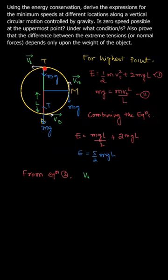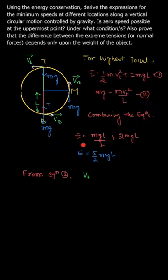At the topmost point, the weight provides the centripetal force: mg equals m vt squared by l. If we substitute m vt squared as mgl into the energy equation, we get E as mgl/2 plus 2mgl, which gives us E equal to 5/2 mgl.